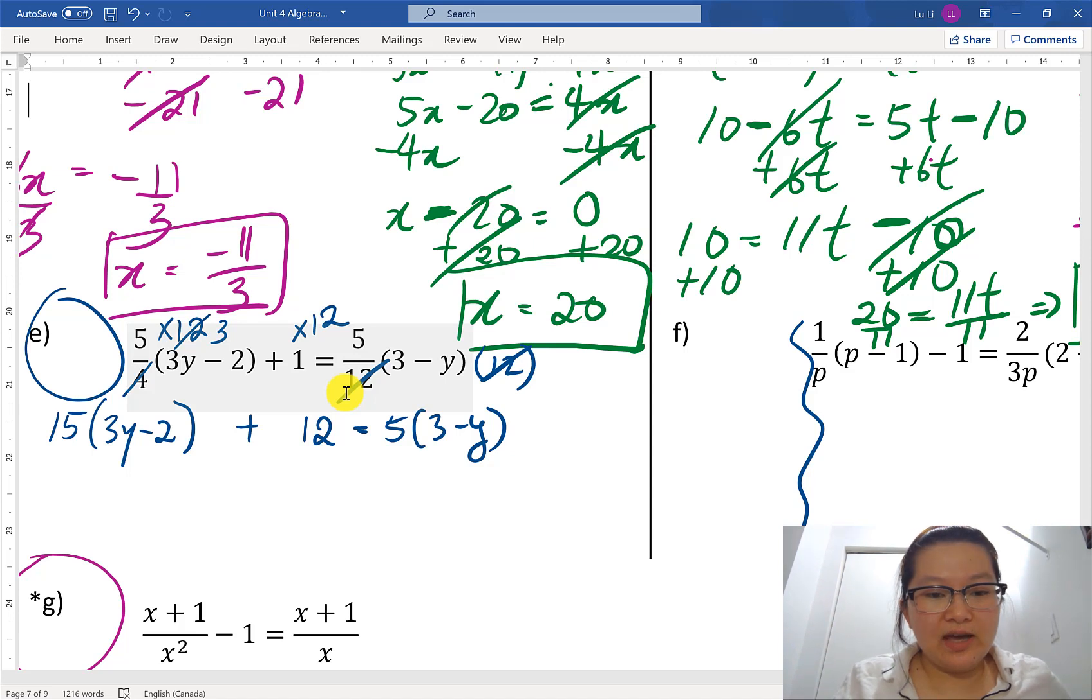Now we need to get rid of all of these, we need to make sure we get all of our variables to the same side of the equation. I'm gonna do that by multiplying in my coefficient by distributing it inside the brackets. 15 distributes to 3y. 15 times 3 is 45y. 15 then times negative 2 is going to be negative 30. Plus 12, that's still there. That's equal to 5 times 3 is 15. 5 times negative y is negative 5y.